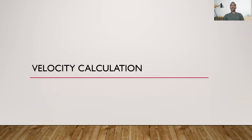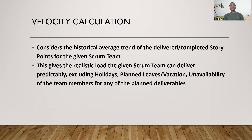Now moving on to velocity calculation. The velocity calculation comes into context when you have some historical sprints to look at. We take the average trend of the delivered or completed story points for the given scrum team. The velocity should be calculated individually for each and every scrum team — it shouldn't be averaged across all teams. The same way we calculated capacity individually, we calculate velocity individually for each scrum team.